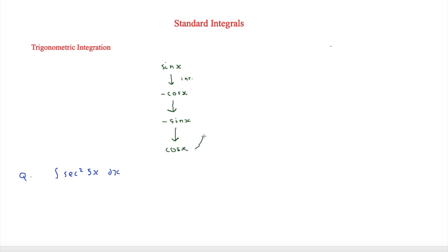This goes all the way back around: integrating cos x takes you back to sin x. This is different from differentiation — differentiating sin x gives cos x, then minus cos x, and so on. So it's just the reverse order. Now here we have a question asking us to integrate sec squared 5x.